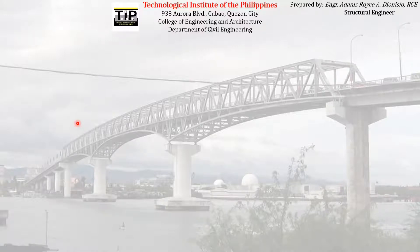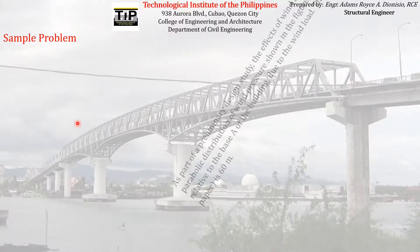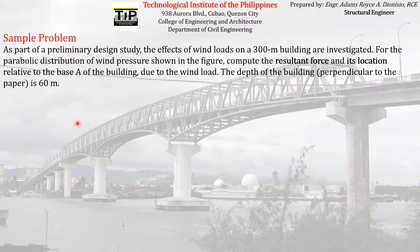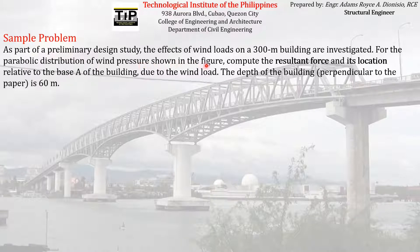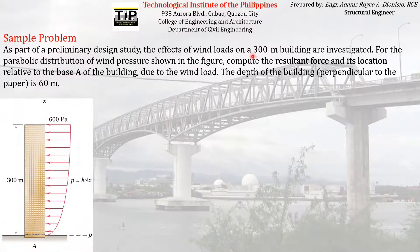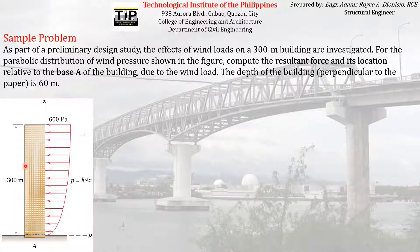Let's try to apply all the things we have studied so far in a sample problem. As part of a preliminary design study, the effects of wind loads on a 300-meter building are investigated for the parabolic distribution of wind pressure shown in the figures. Compute the resultant force and its location relative to the base A of the building. The depth of the building perpendicular to the paper is 60 meters.